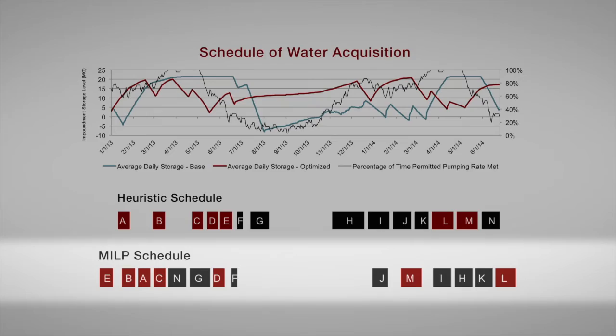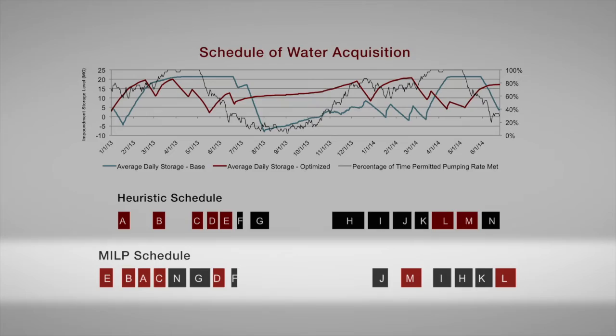The important thing is that through that schedule, we're able to greatly reduce the number of trucks that are needed to transport the water — in fact, from 14,000 to less than 1,400 trucks. That's one order of magnitude reduction, and that then also translated, of course, in a reduction in emissions of CO2.